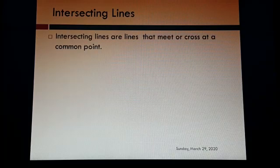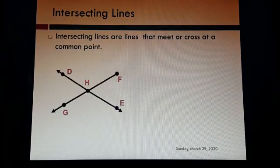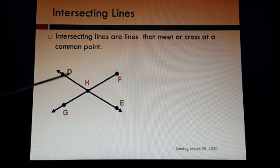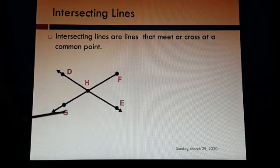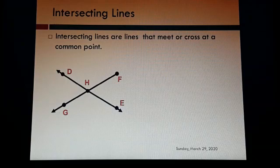Intersecting lines are lines that meet or cross at a common point. They can be rays, they can be line segments, they can be lines. Here you can see that DE is a line and FG is a ray, and both are intersecting at the point H. So point H is the intersecting point.